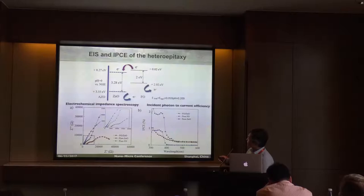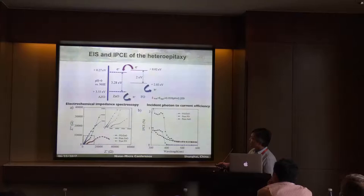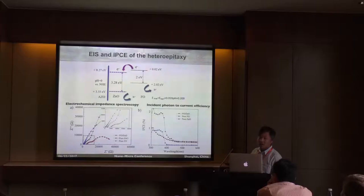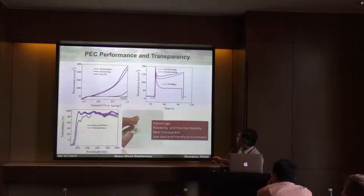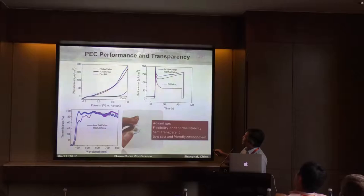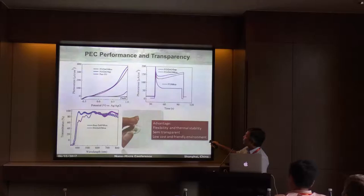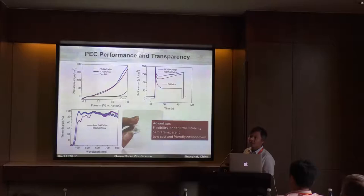We then do more measurements. We have done transient absorption spectroscopy and checked the impedance — when you combine these two materials together, the impedance is smaller compared to the pure individual materials. We also did the IPCE measurement, and you can see the IPCE is also enhanced. For the real PEC performance: these are the pure iron oxide results, and this is iron oxide combined with zinc oxide on a single crystalline substrate — but it is not flexible. When you do it on muscovite, you can get almost the same performance.